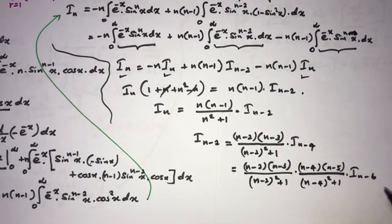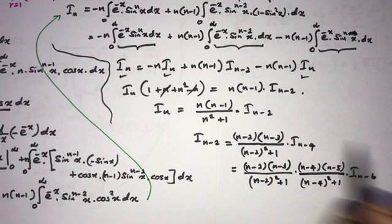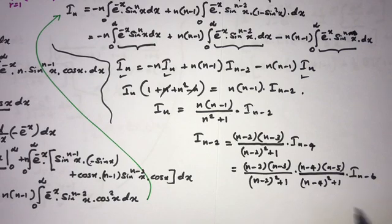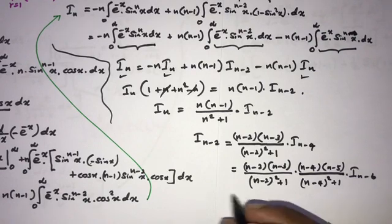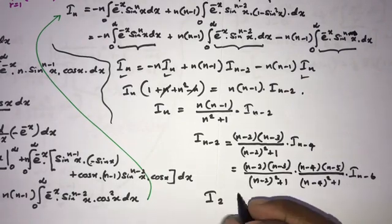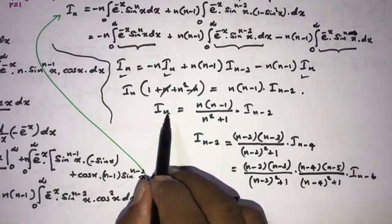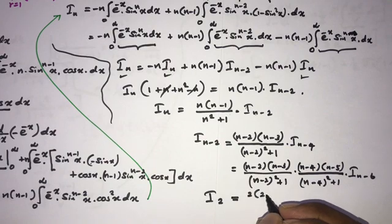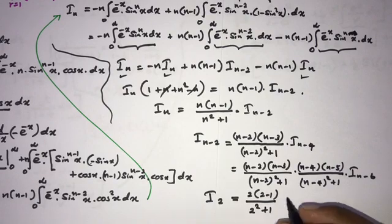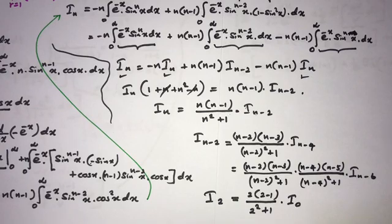Since n is an even integer, the chain terminates at I_2. Using the recurrence with n equals 2: I_2 equals 2 times 1 over (4 plus 1) times I_0, which is 2 over 5 times I_0. We can now write the full telescoping product for I_n by multiplying all these recurrence steps together.